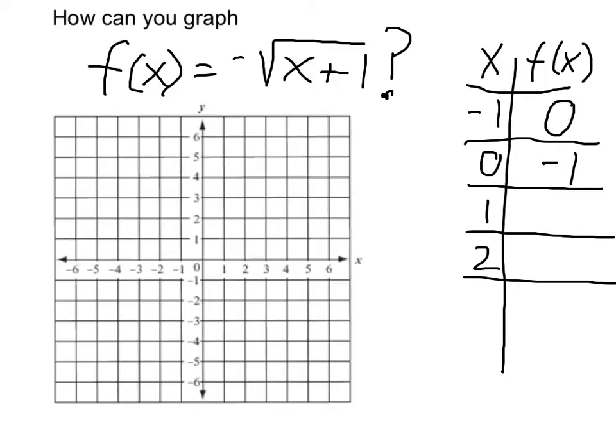If I put in 1, if I put 1 in for x, that gives me 2. So I'd have the square root of 2 and it's going to be negative square root of 2.